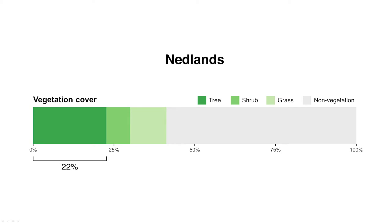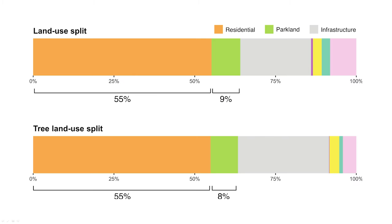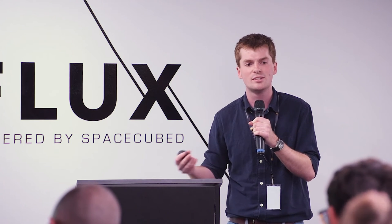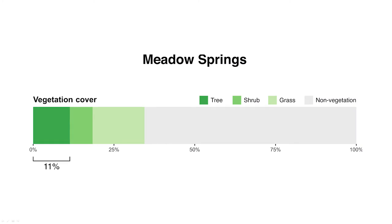Let's start with Nedlands. I've just zoomed in on one of those bar charts from the right-hand side — this particular one is the vegetation cover of the suburb. You'll see that Nedlands is recording 22 percent tree canopy cover. If we look at the raw land uses that make up the suburb in this top bar chart, you'll see 55 percent of the land is classified as residential and nine percent as parkland. The bar chart below looks quite similar — that shows the distribution of just the tree canopy by land use, and you'll see 55 percent of the tree canopy resides on residential land and eight percent resides on parkland. The reason these are so similar is that in Nedlands, tree canopy is proportionally distributed by land use.